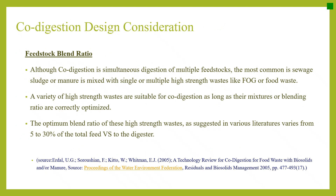Let's move to codigestion design considerations. Codigestion is a new trend — the simultaneous digestion of multiple feedstocks, most commonly wastewater sludge or manure mixed with single or multiple high-strength wastes like FOG or food waste. The optimum blend ratio of high-strength waste as suggested in the literature varies from 5 to 30 percent of the total feed VS to the digester — meaning the VS contribution from high-strength waste should not exceed 30 percent of the total feed VS.